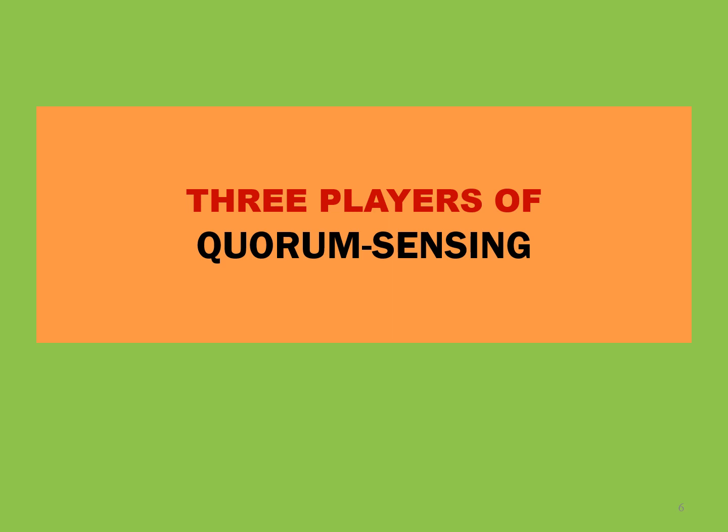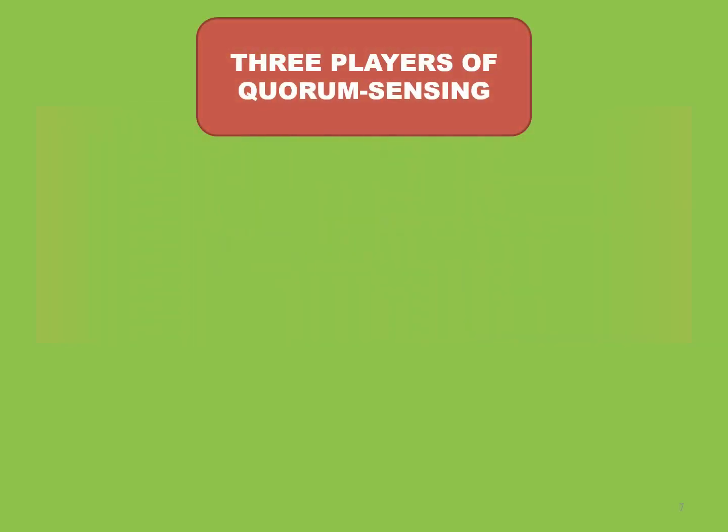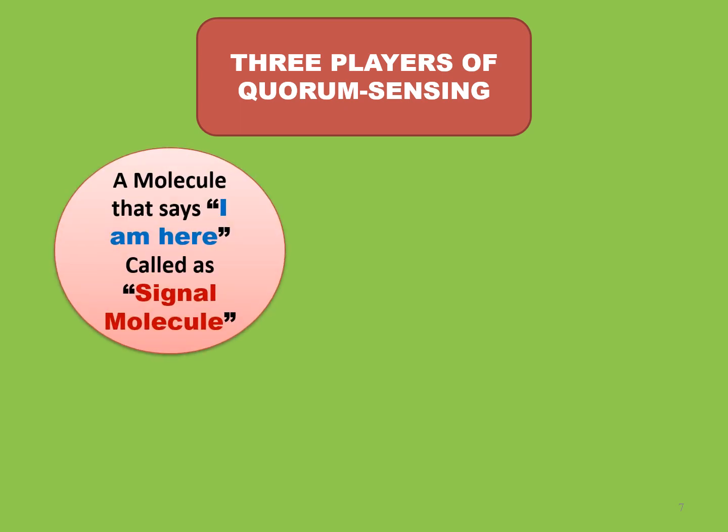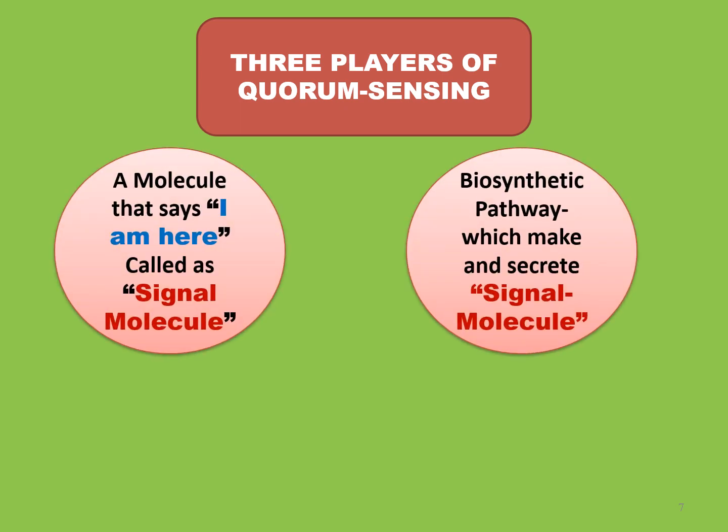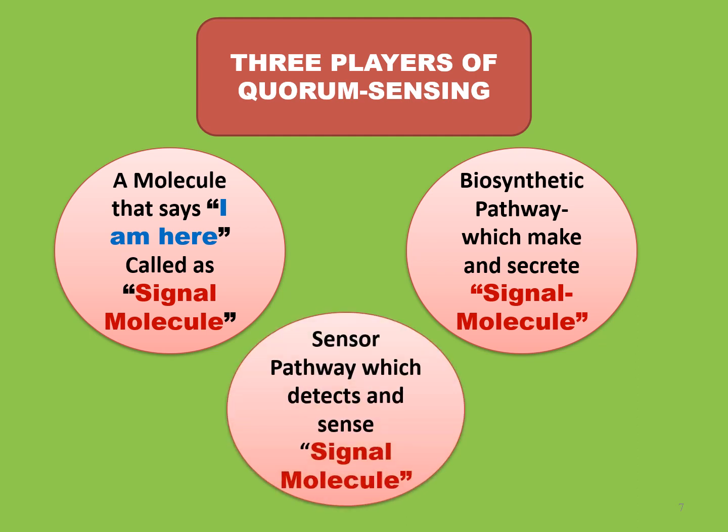The three pillars of quorum sensing: quorum sensing consists of three main pillars. Number one, a signal molecule that says 'I am here,' which will be detected by the bacteria. Number two, a biosynthetic pathway which makes and secretes the signal molecule. Number three, a sensor pathway which detects and responds to the signal molecules. This whole system depends on the production and secretion of signal molecules.